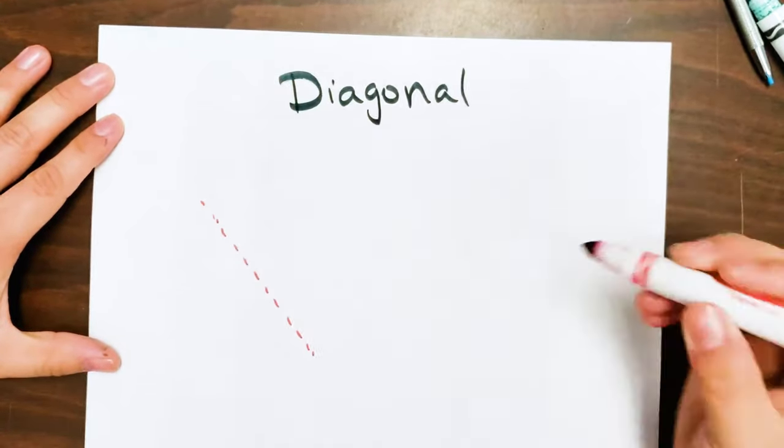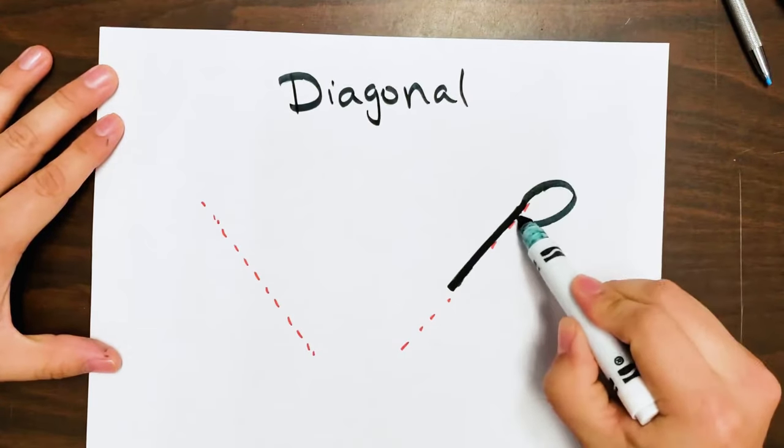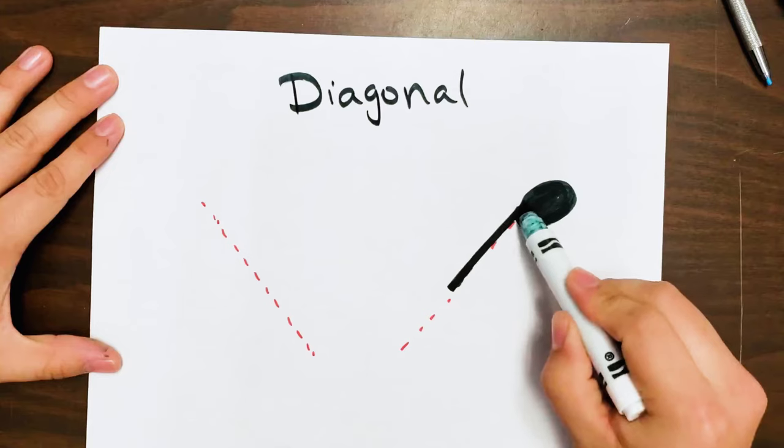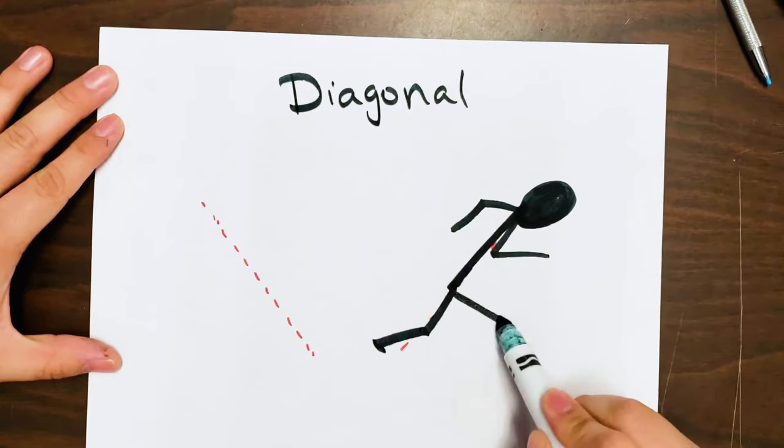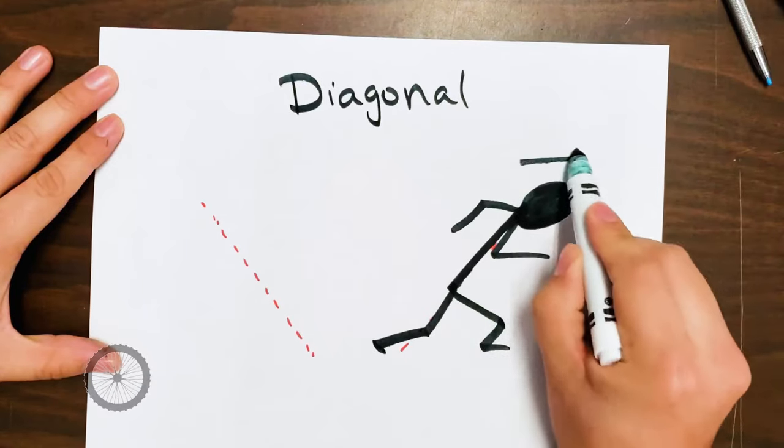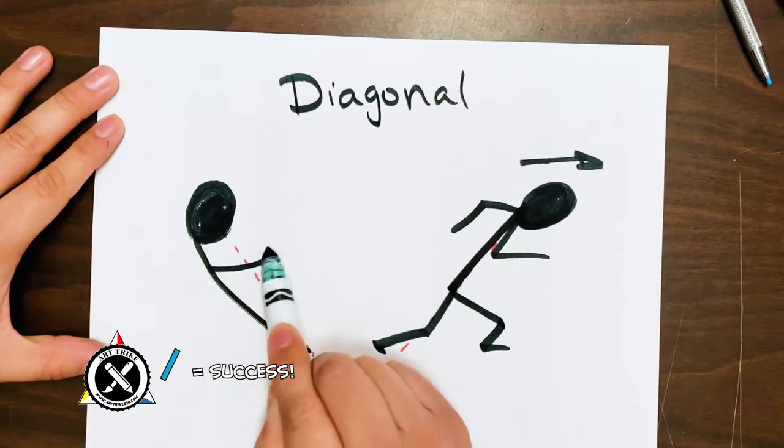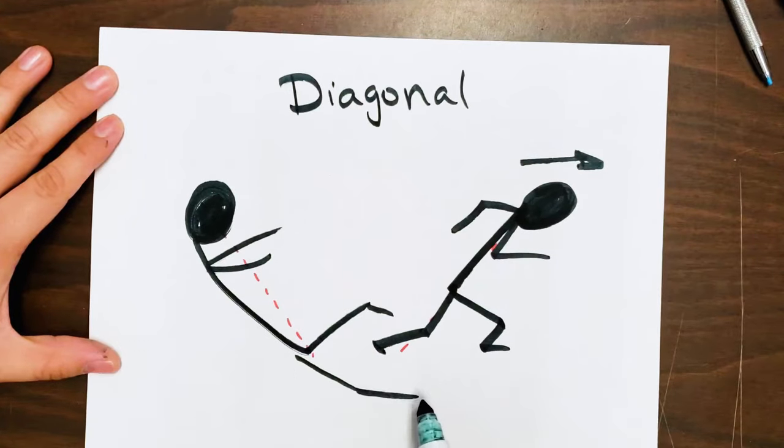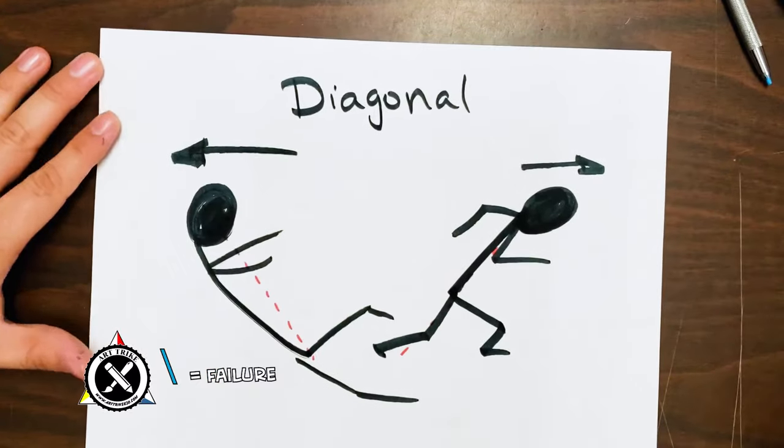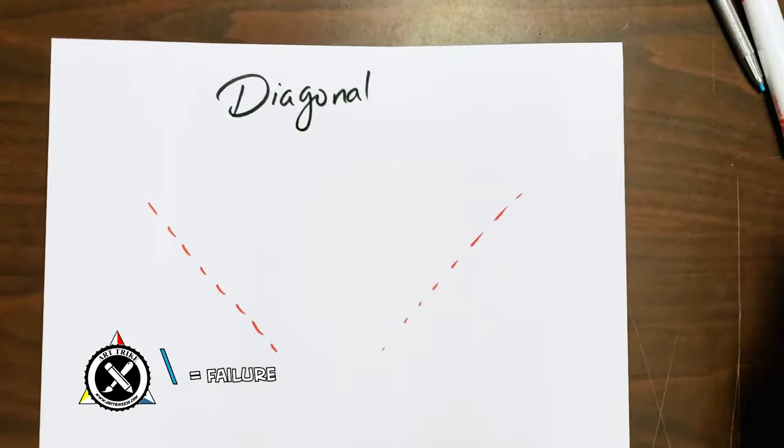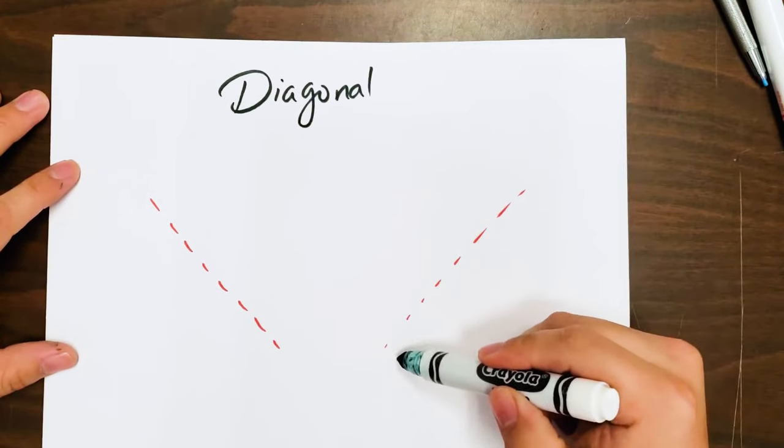Okay, so diagonal lines are a bit trickier. Depending on the direction of the diagonal line, we can either get a positive or negative effect. A diagonal line that goes bottom to top to the right will give us a sense of accomplishment. While a diagonal line going top to bottom going to the right will give us a sense of failure.